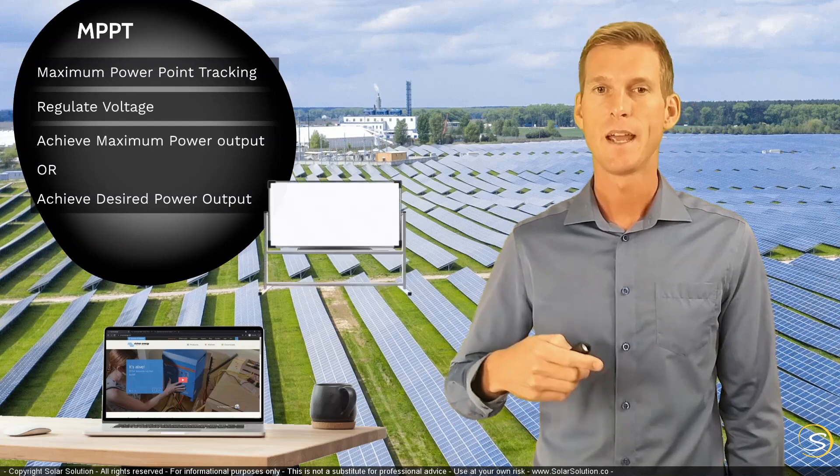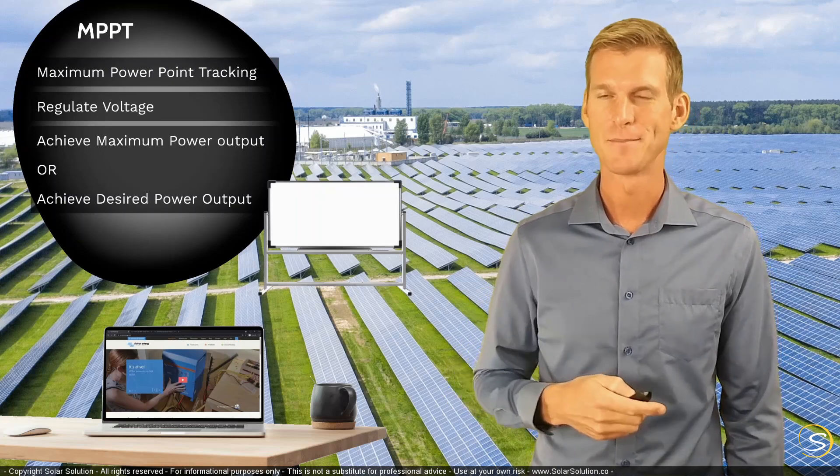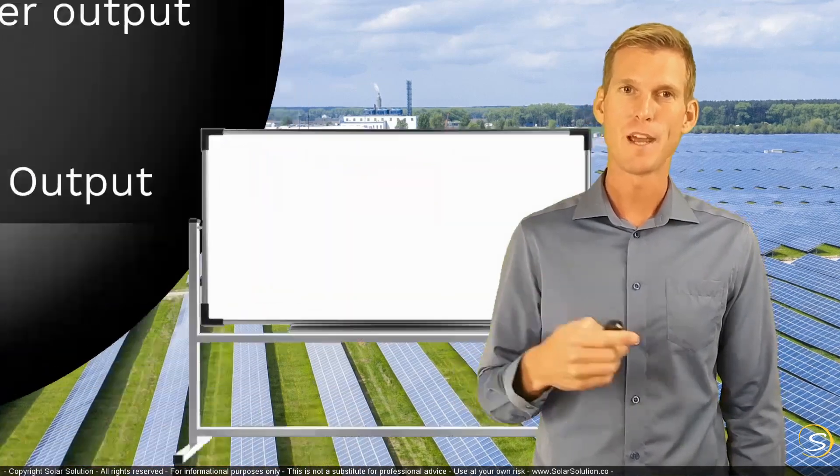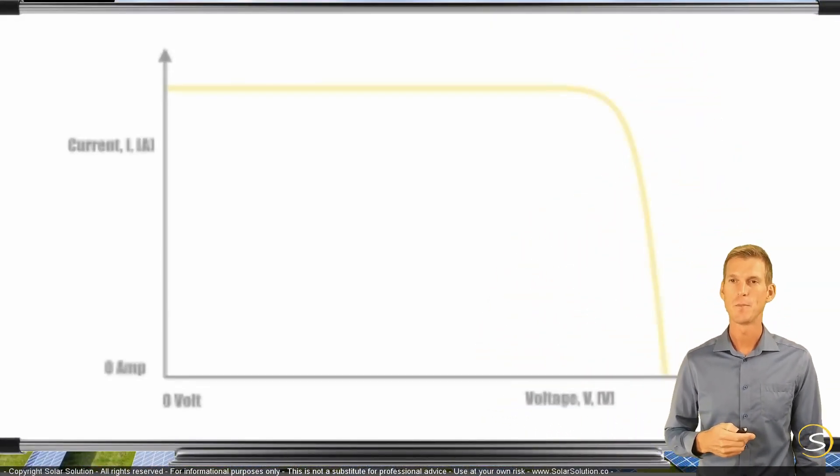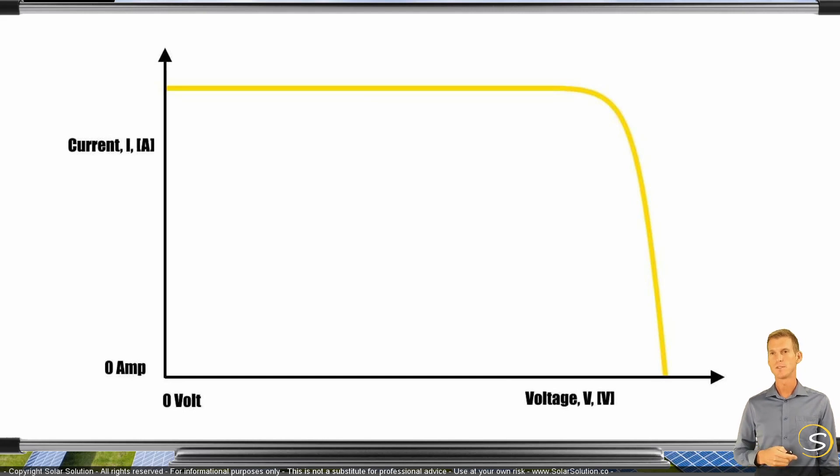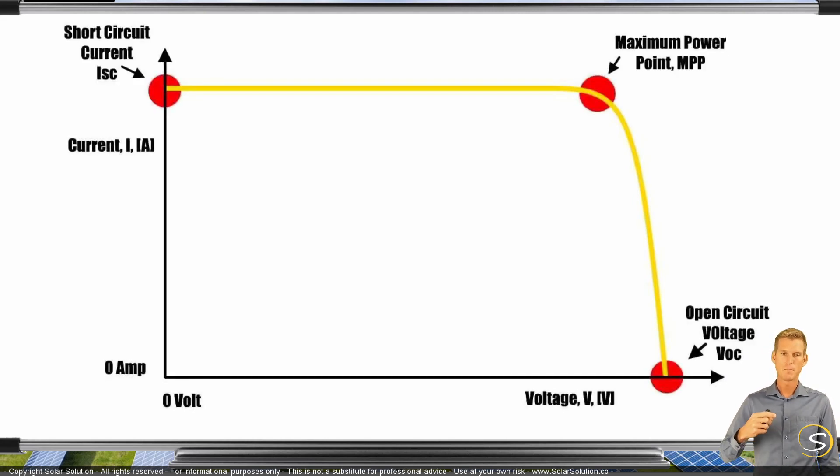Now let's go to the whiteboard again and explain this in a more visual way. Right, so we have this graph, we know by now what it looks like, and we've got the three points on the graph. So imagine that an MPPT solar charge controller at the start of a charging cycle, at the start of the day,